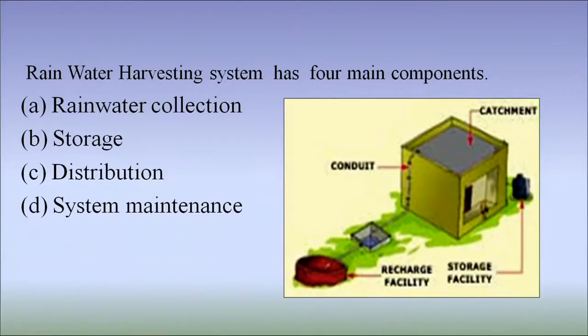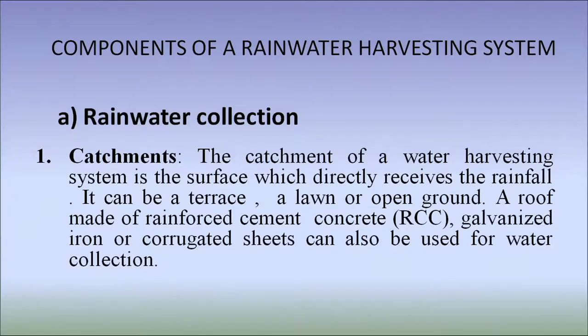A rainwater harvesting system has four main components: first, collection of rainwater; second, storage; third, distribution; and fourth, maintenance. The catchment is the first component — rainwater collection is by catchment, conduits take the water down for distribution, and then it is stored. The catchment of a water harvesting system is a surface which directly receives the rainfall. It can be a terrace, a lawn, open ground or any other permeable surface. A roof made of reinforced cement concrete, galvanized iron or corrugated sheets can also be used for water collection.